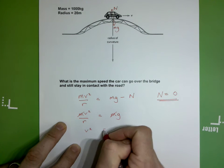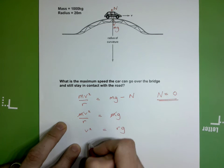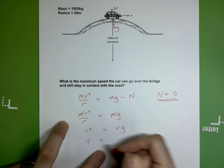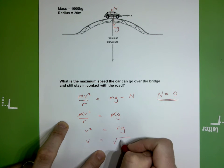Rearranging still further, I get that v squared equals rg, and then finally v equals the square root of r times g.